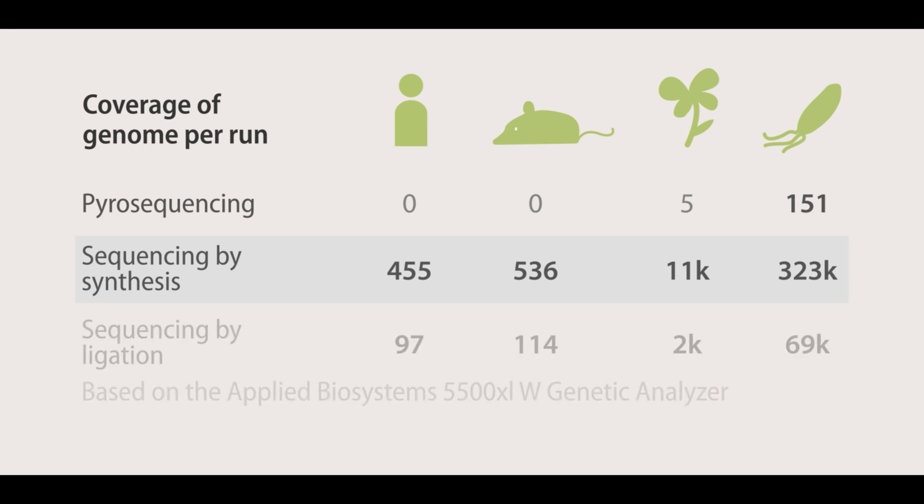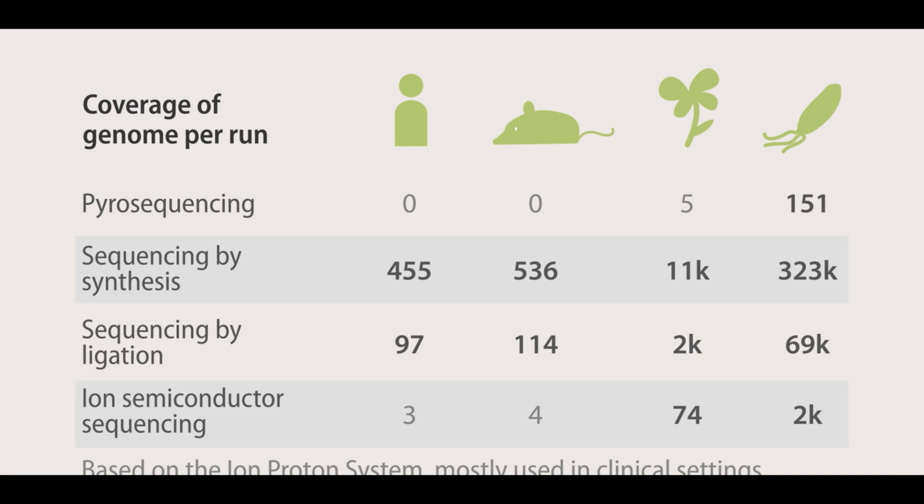The sequencing by ligation method also generates enough coverage for all genomes to be used. However, it isn't capable of generating nearly as much output as the Illumina HiSeq machines. The ion proton machine is used mostly in clinical setting because it is able to provide a sufficient size output within 2 hours.